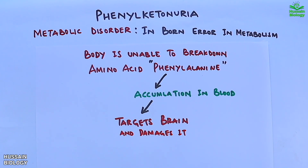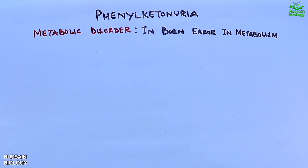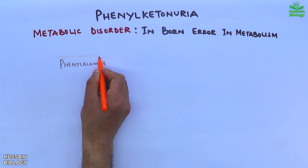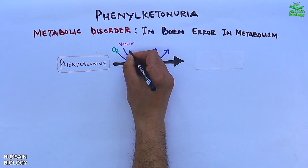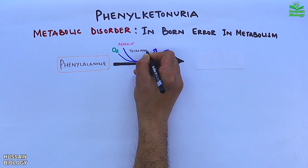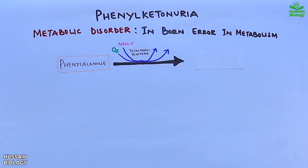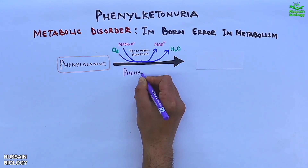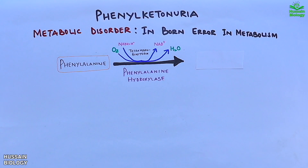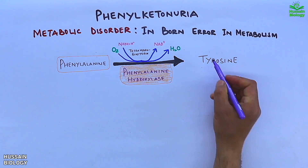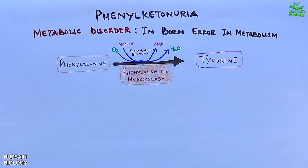First, let's see the normal mechanism in detail. Here we have a phenylalanine amino acid which, in the presence of oxygen, NADH, and tetrahydrobiopterin, is acted upon by phenylalanine hydroxylase enzyme and converts phenylalanine into tyrosine. Along with that we get water and NAD+.